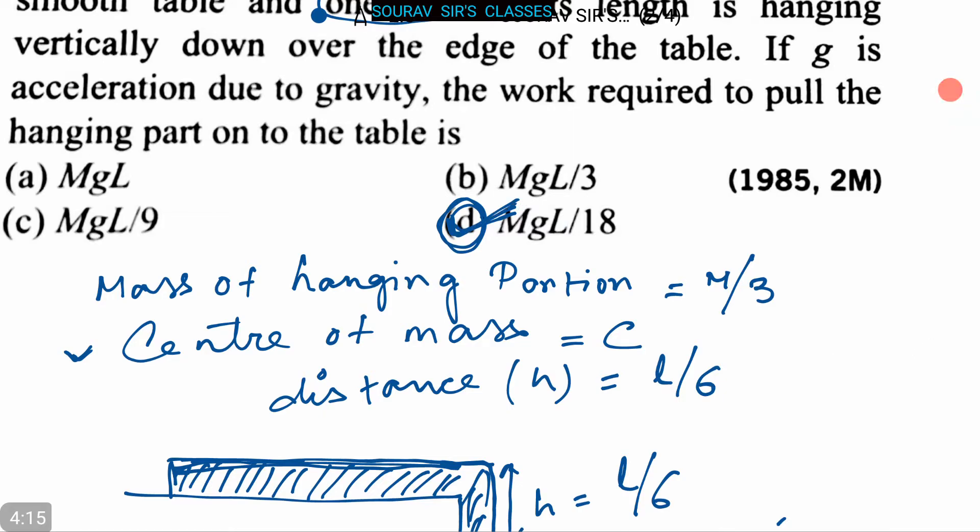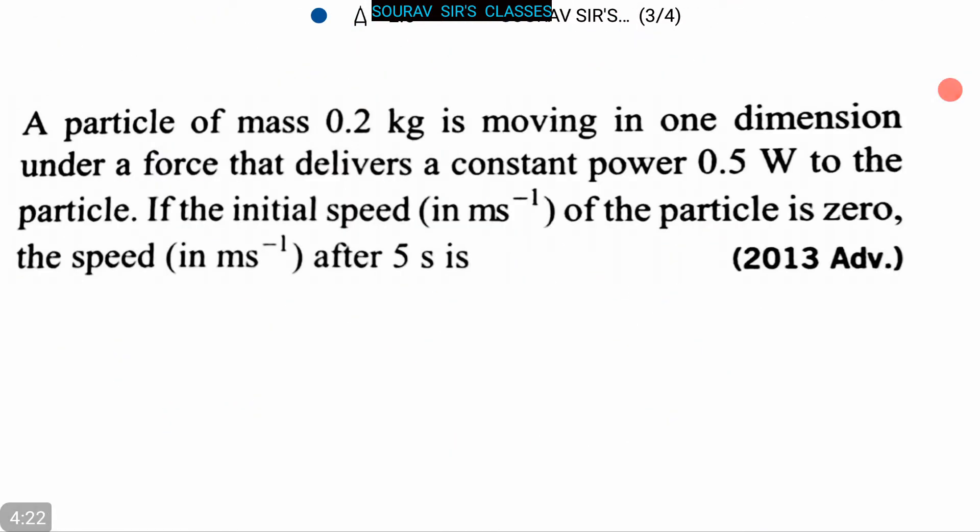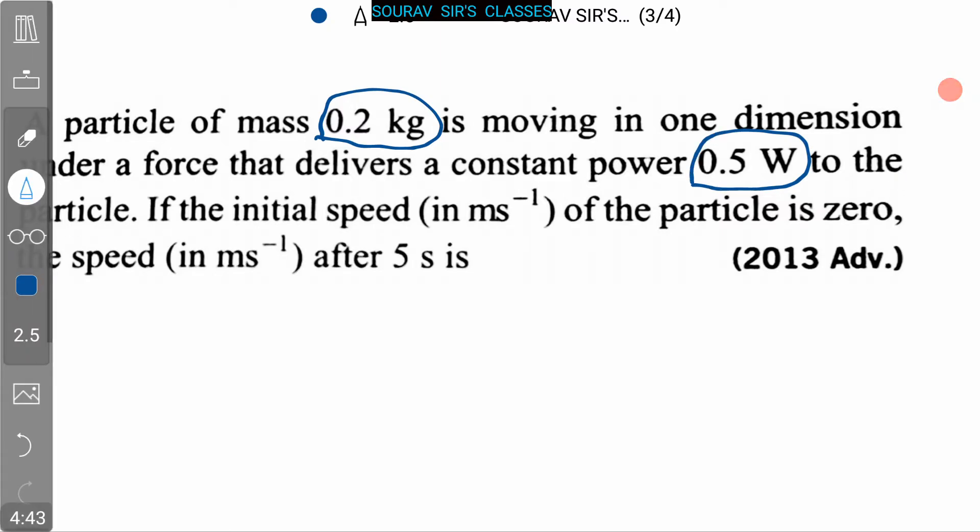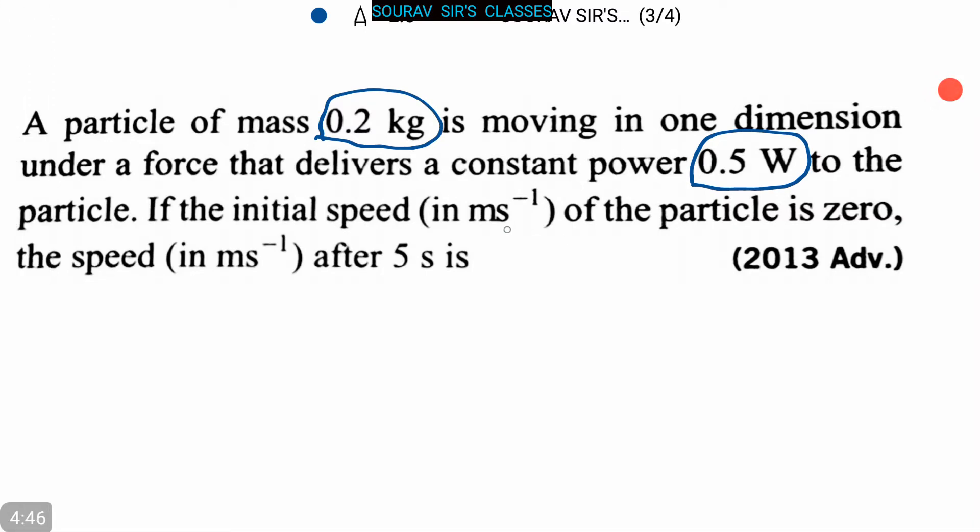Our next question is: A particle of mass 0.2 kg is moving in one dimension under a force that delivers a constant power of 0.5 watt to the particle. If the initial speed in meters per second of the particle is zero, the speed after 5 seconds is?